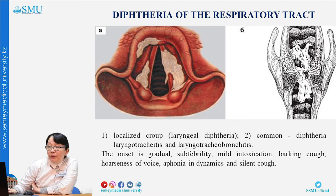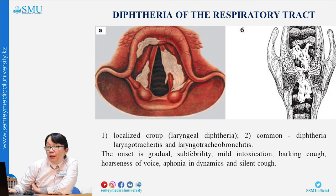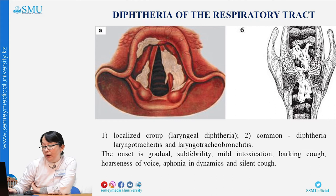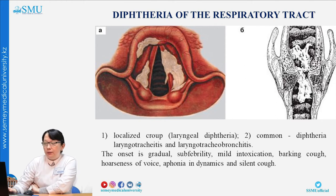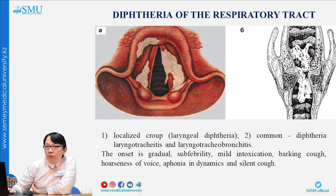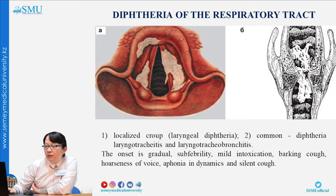Diphtheria of the respiratory tract: pseudomembranes are located on the vocal cords of the larynx. There are two forms: localized croup (laryngeal diphtheria) and common form (laryngotracheitis, laryngotracheobronchitis). Clinically: not high fever, subfebrile 37–37.5°C, mild intoxication, barking cough, hoarseness of voice, progressing to aphonia and silent cough. The main difference from parainfluenza: in parainfluenza there is stenosis of the larynx without aphonia; in diphtheria of the larynx, aphonia and silent cough are present.